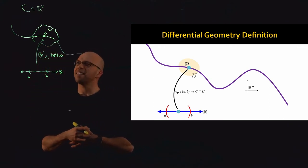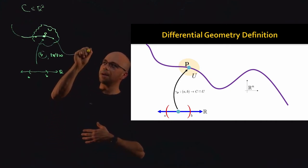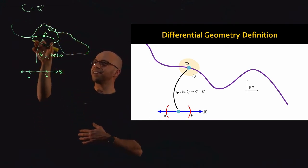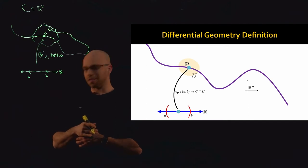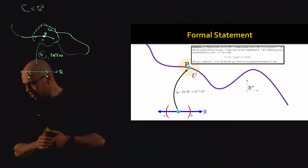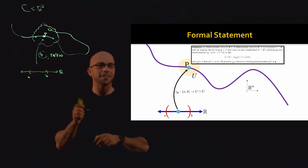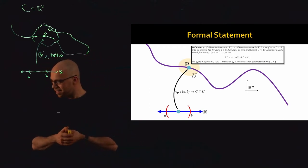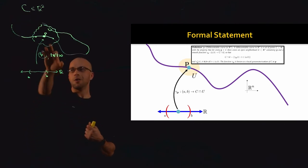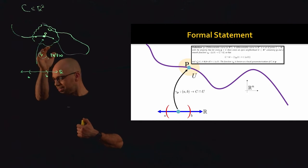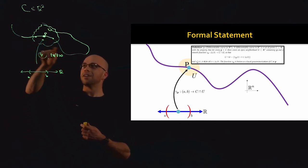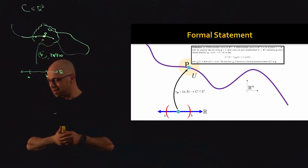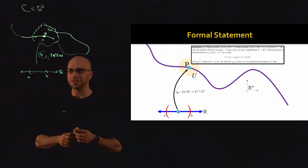So to repeat, because this definition is a little tricky to parse: a curve is a set of points in the plane such that for every point P on the curve, there exists some neighborhood U around P and a function gamma_P where the intersection of the curve and U is parametrized by gamma. We need the neighborhood U because otherwise our curve might come back on itself, giving two separate segments through the same point.